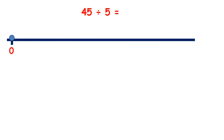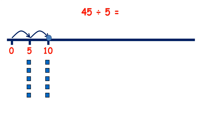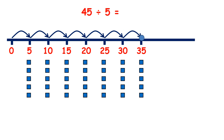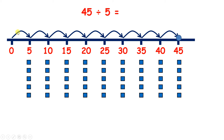Now pause the video and see if you can divide 45 by 5. So let's count up in steps of 5: 5, 10, 15, 20, 25, 30, 35, 40, 45. So we needed 1, 2, 3, 4, 5, 6, 7, 8, 9 jumps to get to 45. We have 9 groups of 5. So 45 divided by 5 is 9.